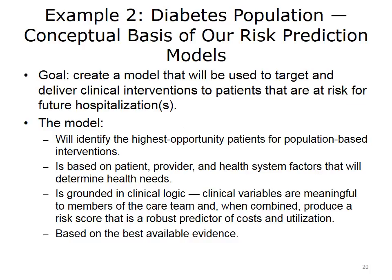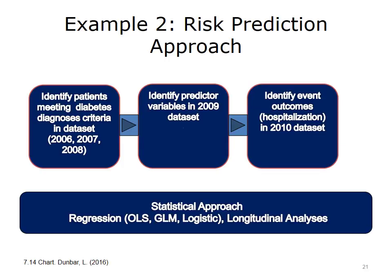Example two is in a health plan population, looking across several different health insurance products at Johns Hopkins to develop a diabetes risk model. The goal is to create a model used to target and deliver clinical interventions to patients at risk for future hospitalizations, helping to identify the highest-opportunity, highest-risk patients for population-based interventions. The model is based on patient, provider, and health system factors that help determine health needs, grounded in clinical logic — meaning there are clinically meaningful variables. When combined, they produce a risk score that is a robust predictor of costs and utilization. Predictor variables were identified in their 2009 data set.